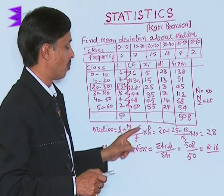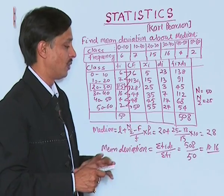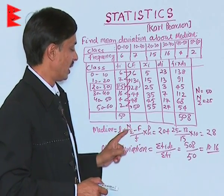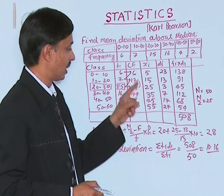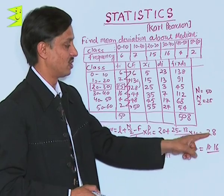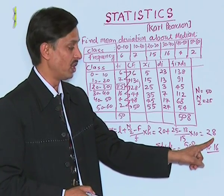So median is L plus N by 2 minus capital F upon small f, which is 15, into class size is 10. So median comes to be 28.